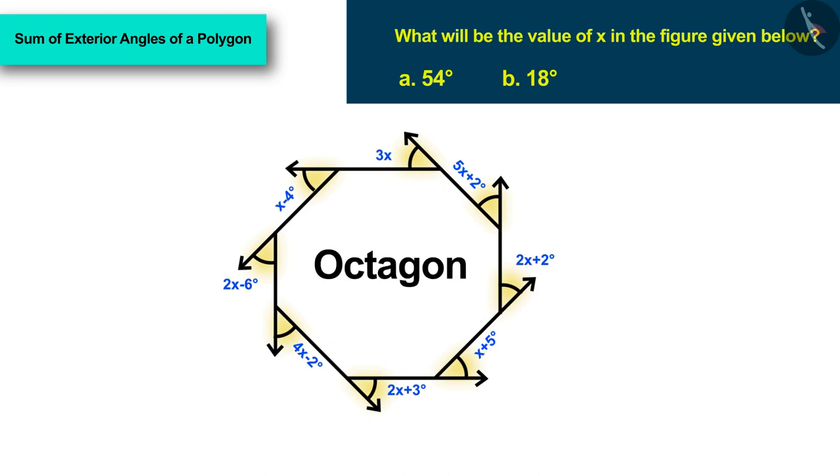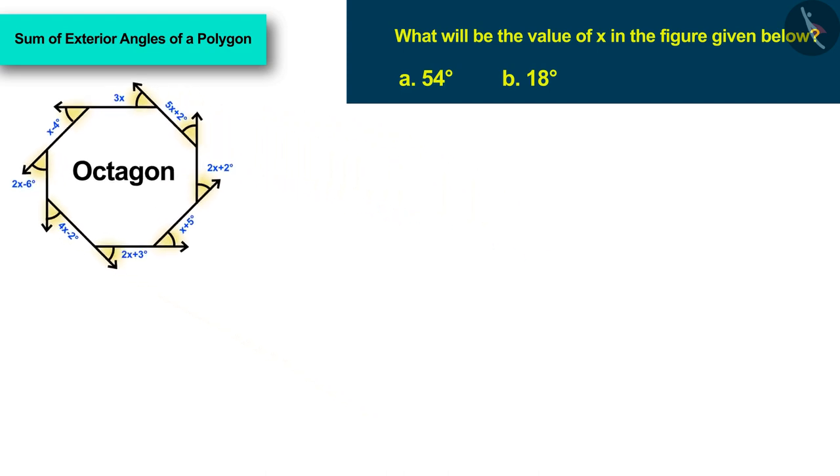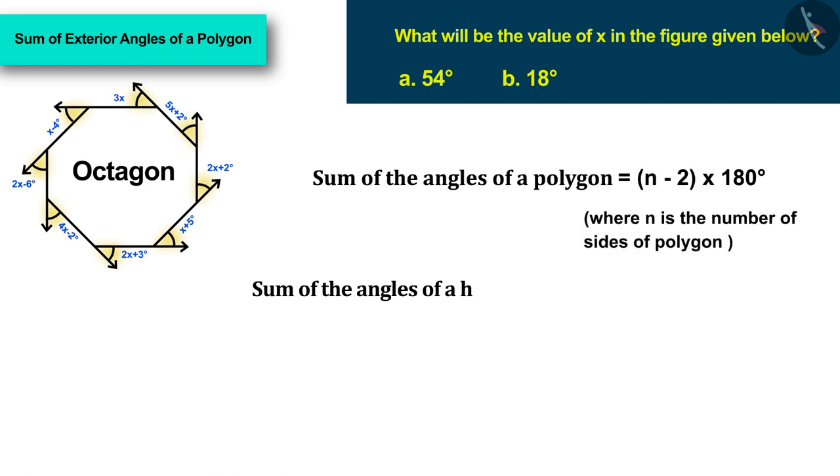Here, the external angles of the octagon are shown. Some children see that it is an octagon and with the help of this formula, find the sum of the interior angles of the octagon, which is 1080 degrees.